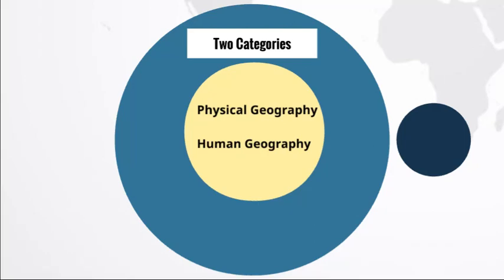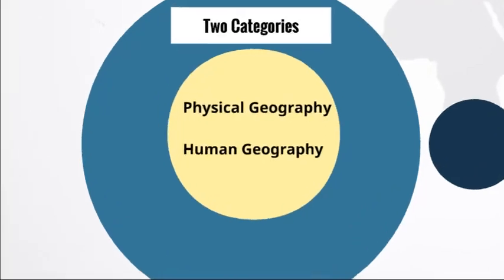Geography is the study of human and non-human features of Earth, our home planet. We must differentiate between physical geography and human geography. Physical geography is the study of the science of spaces, and human geography is concerned with the spatial patterns of humans and their activity over spaces and places. We're going to be looking into both of these types of geography throughout this unit and the entirety of the course.